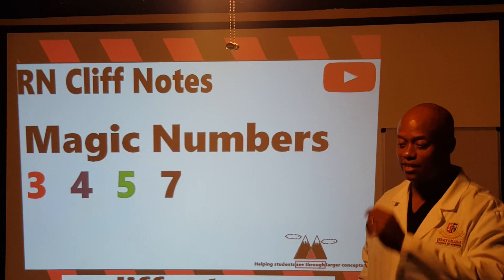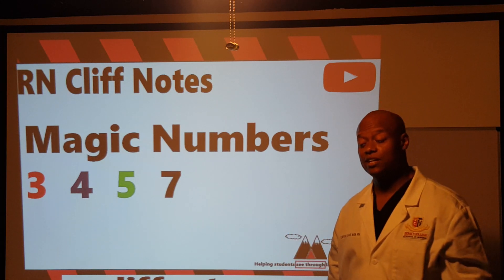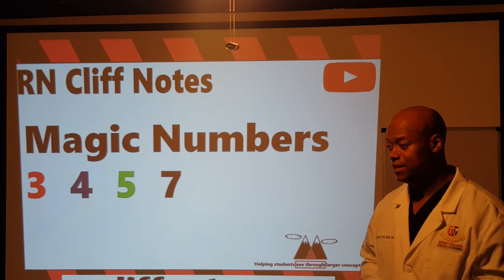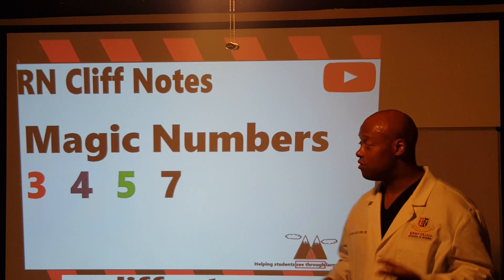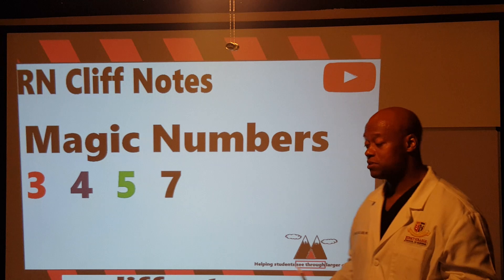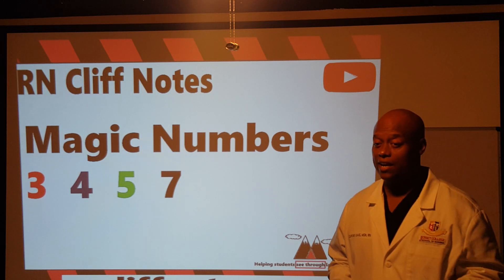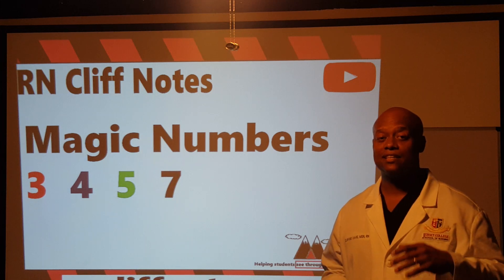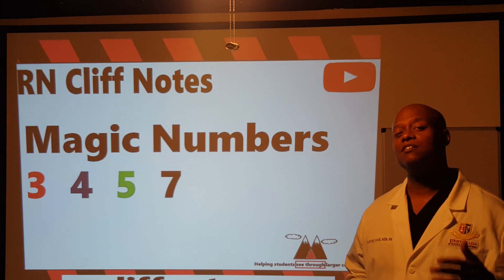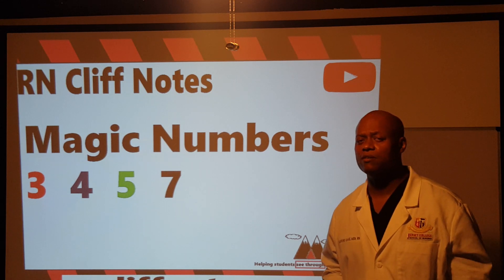The very first thing I'd like to start with is the discussion of magic numbers. When it comes to nursing and medicine, there are four magic numbers, and those numbers are three, four, five, and seven. The idea behind this is that they permeate a lot of aspects of the sciences, so they're pretty important to know.